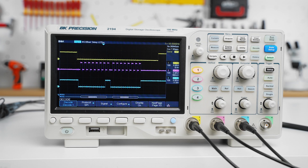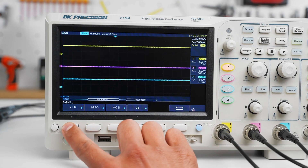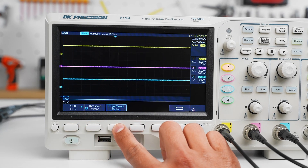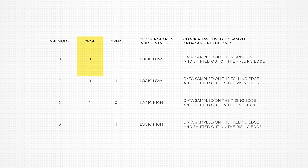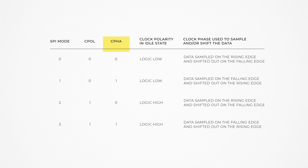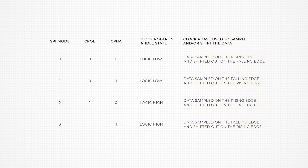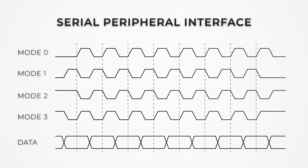Let's go back for a second to the clock signal. In SPI, the controller can not only generate a clock signal, but also select the polarity and the phase. The polarity bit sets the clock signal either normally low or normally high. The phase bit selects whether to sample or shift the data on the rising or the falling clock edge. Because of these two bits, SPI is divided into four modes.